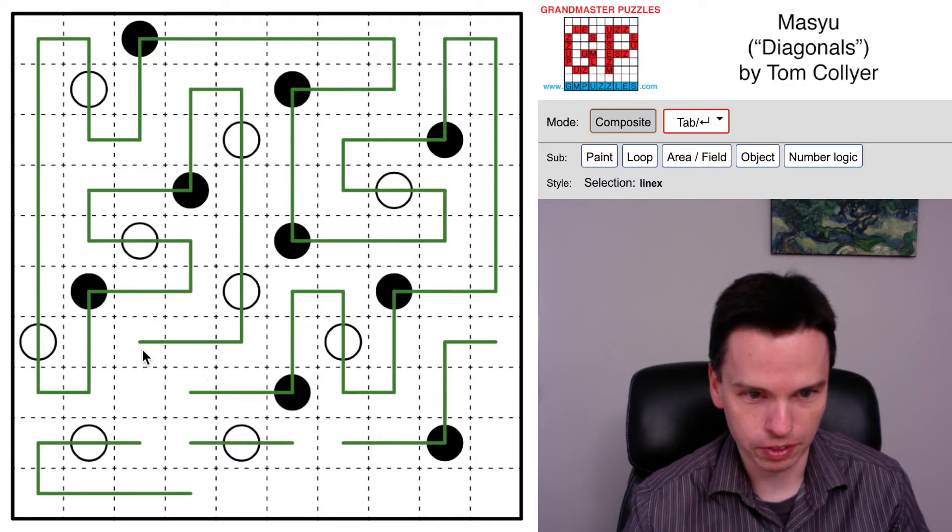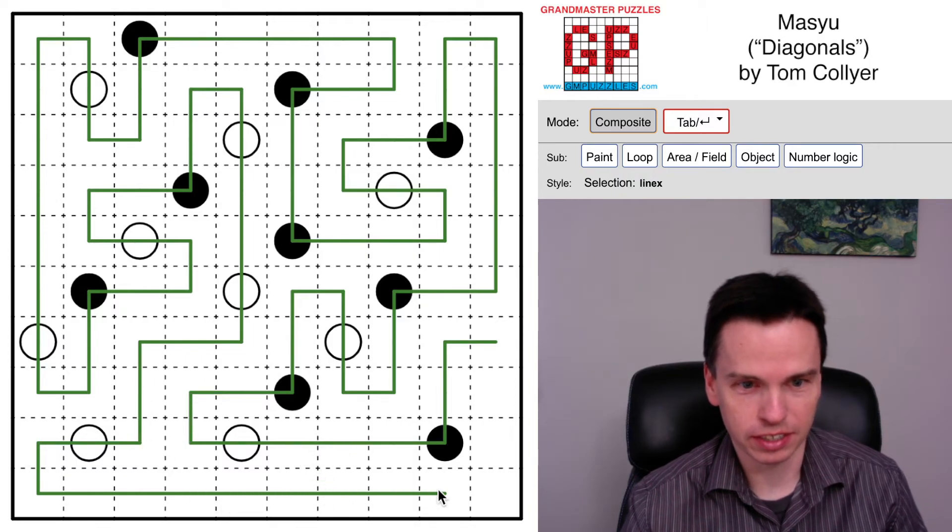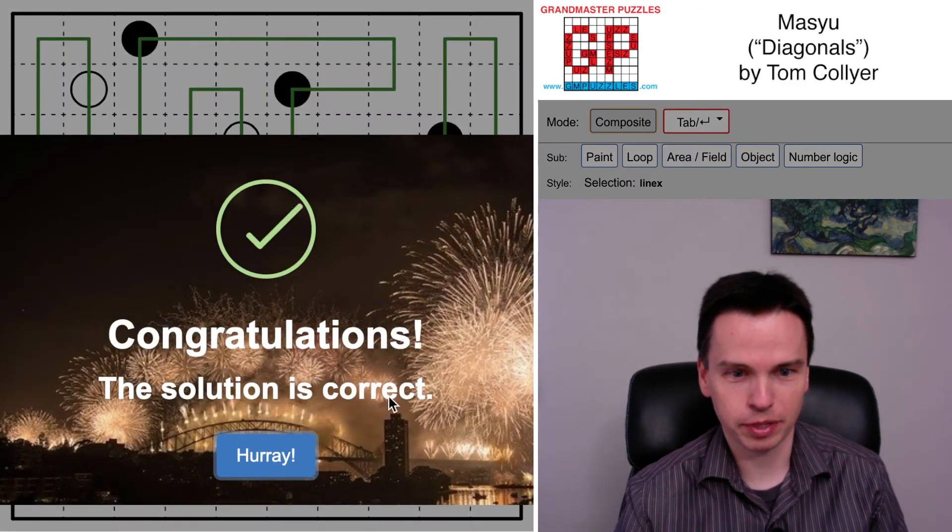We don't want to close the lower right off, so we actually end up using, as a hidden theme in this puzzle, all of the cells.